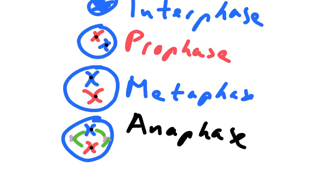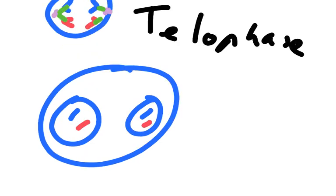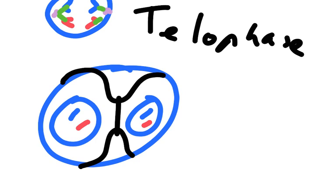After anaphase, telophase begins. In telophase, we start to see a new nuclear membrane forming around each set of chromosomes. At the end of telophase, there are two new nuclear membranes, each forming around two chromosomes, giving two 2N cells where 2N equals 2. Next, the cell breaks in two — cytokinesis — forming two complete new cells, each containing two chromosomes.